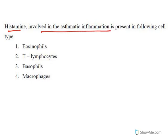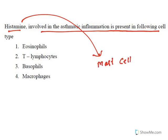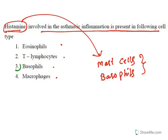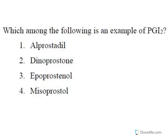Next question: 'Histamine involved in asthmatic inflammation is present in which cell?' Histamine is a chemical mediator widely present in two cell types: mast cells and basophils. The options include eosinophils, T-lymphocytes, basophils, and macrophages — all immune mediators. The major reservoir for histamine among these options is basophils; the other major source being mast cells.